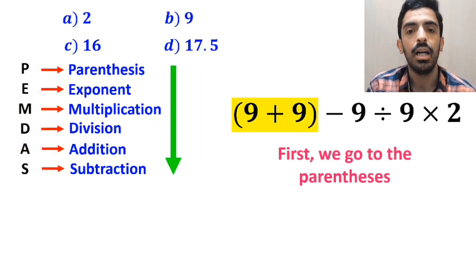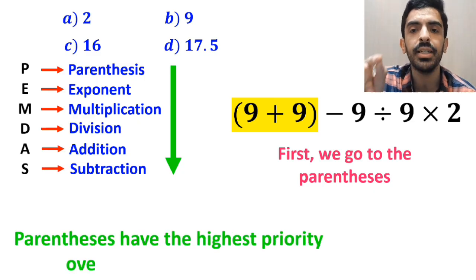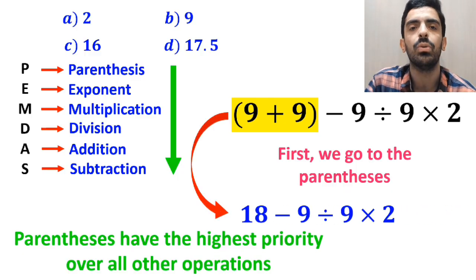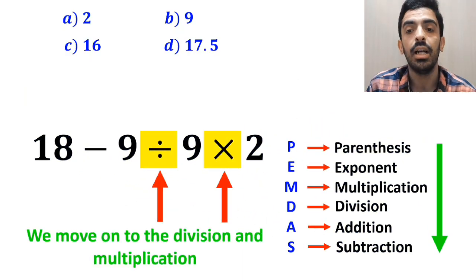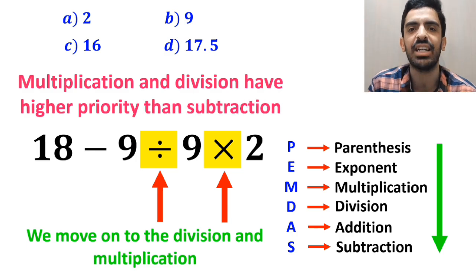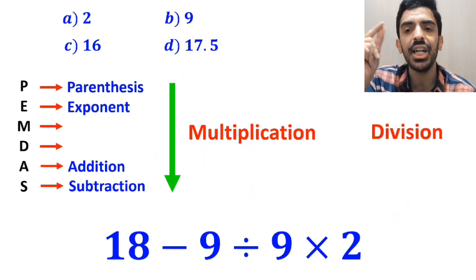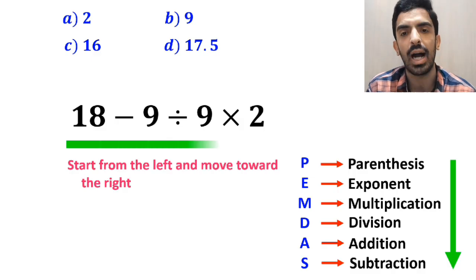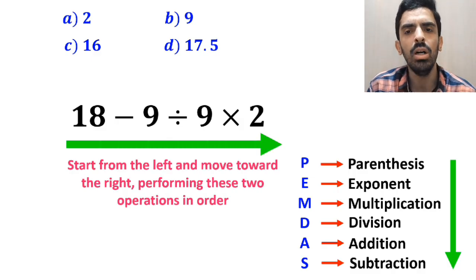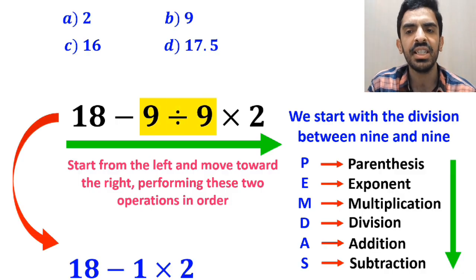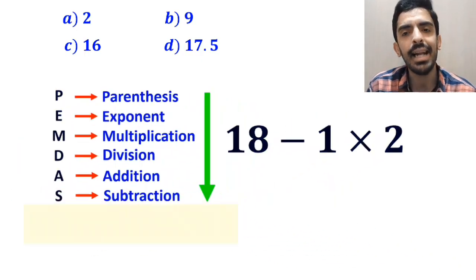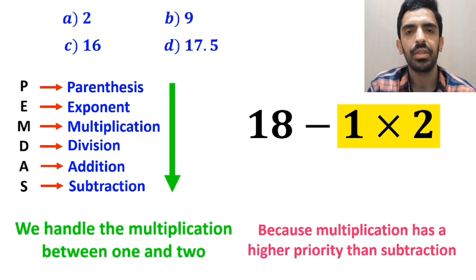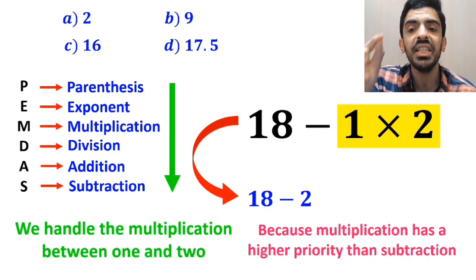First, we go to the parenthesis, because according to the PEMDAS rule, parentheses have the highest priority over all other operations. So we rewrite the expression as 18 minus 9, divided by 9, then times 2. In the next step, we move on to division and multiplication, because they have higher priority than subtraction. Importantly, multiplication and division have exactly the same level of priority, so we start from the left and move right. First, we do the division between 9 and 9, which simplifies the expression to 18 minus 1 multiplied by 2. Then we handle the multiplication between 1 and 2, giving us 18 minus 2, which ultimately gives us the answer 16.